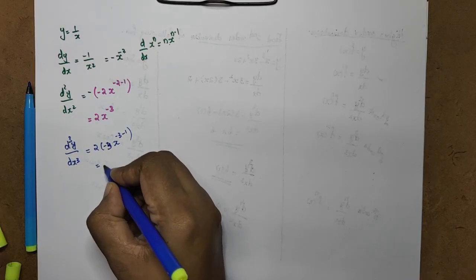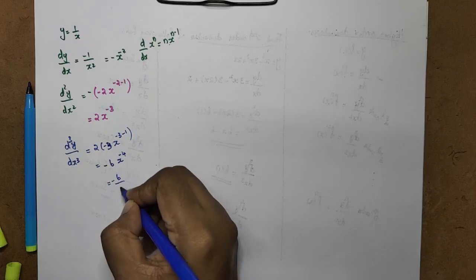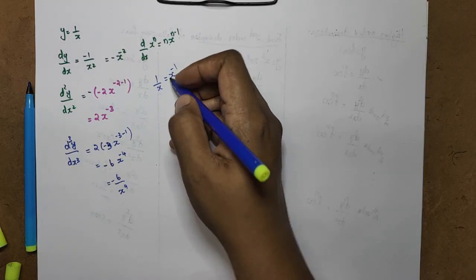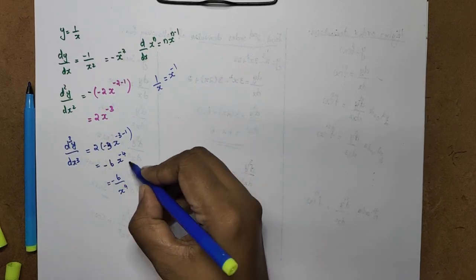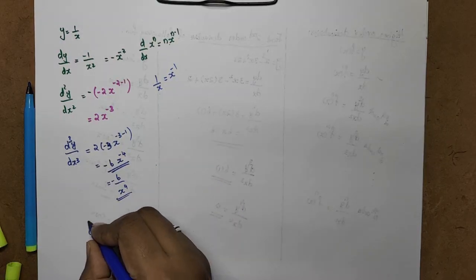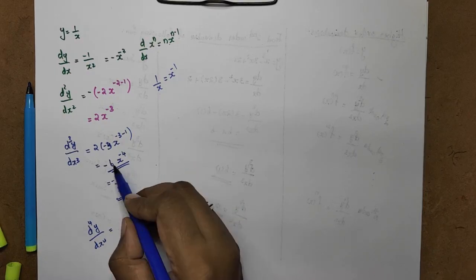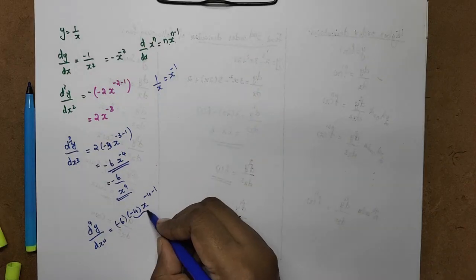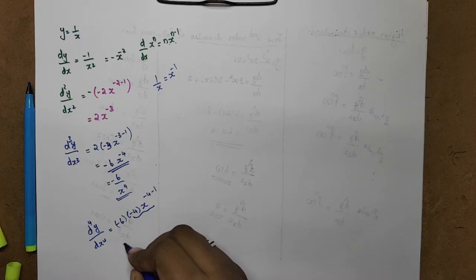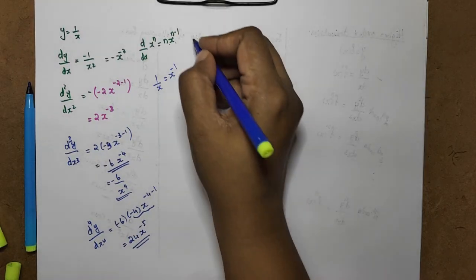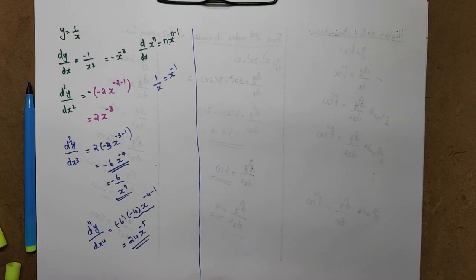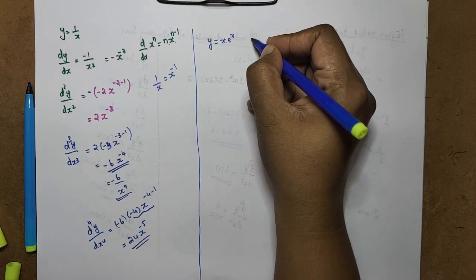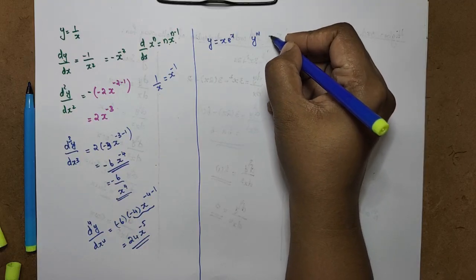So d³y/dx³ = minus 6/x⁴. For d⁴y/dx⁴: differentiate minus 6·x^(−4), multiply minus 6 by minus 4, giving plus 24·x^(−5). We can write x^(−1) as 1/x in the numerator — x^(−2) as 1/x², and x^(−1) as 1/x. If you have to move the power to the denominator, use the negative exponent rule.